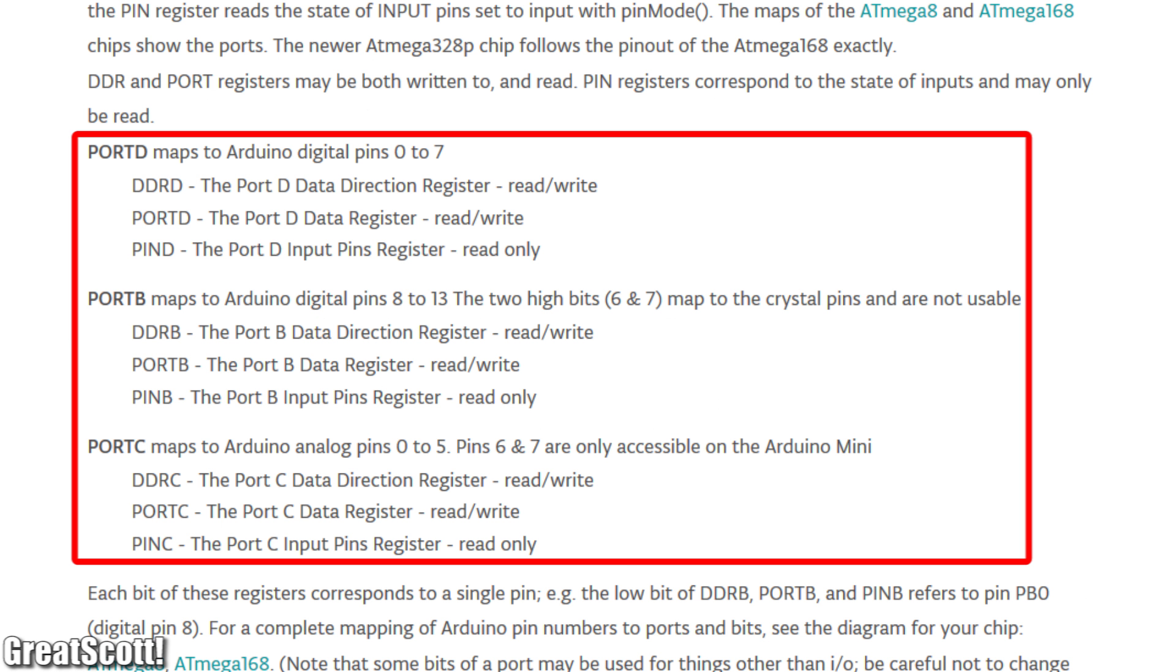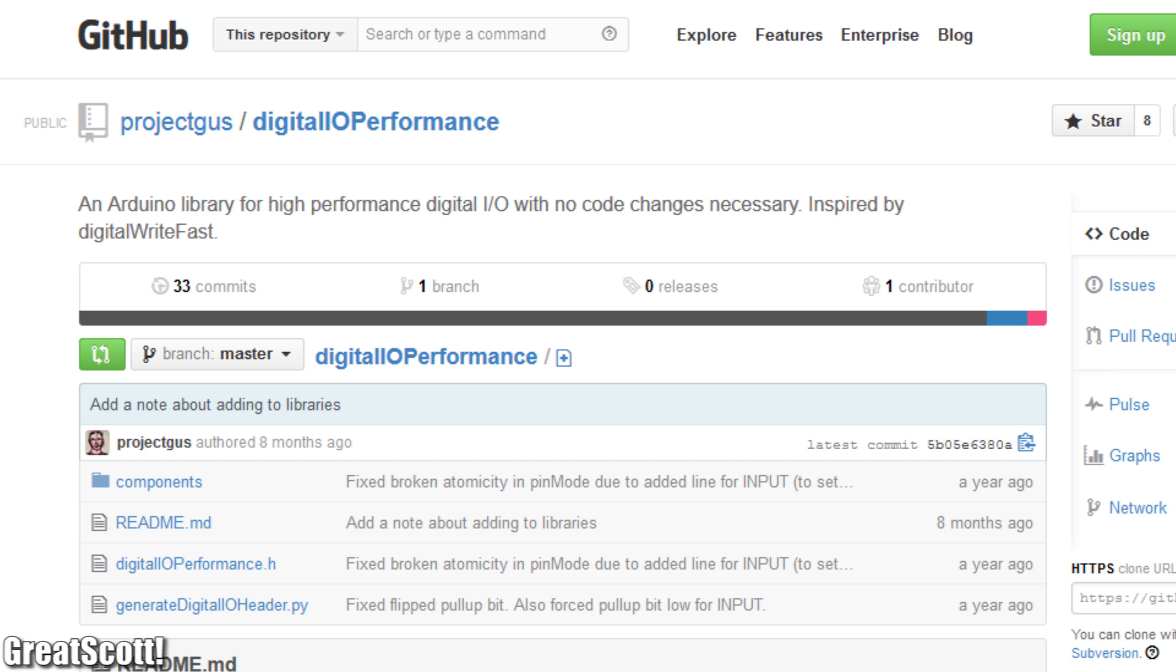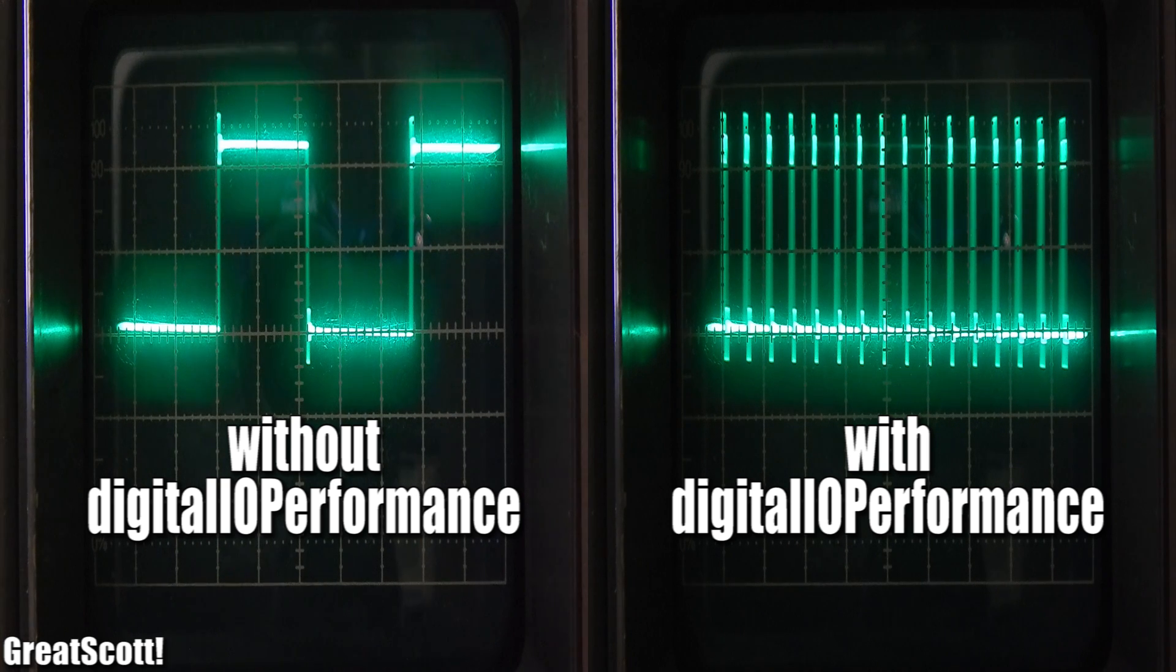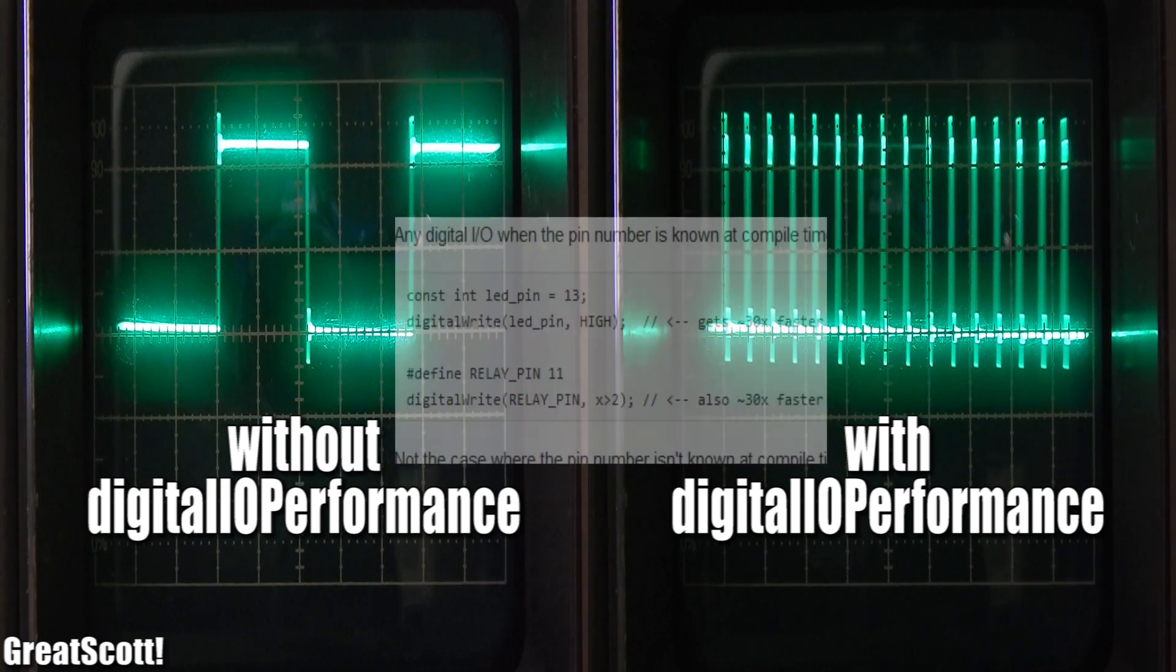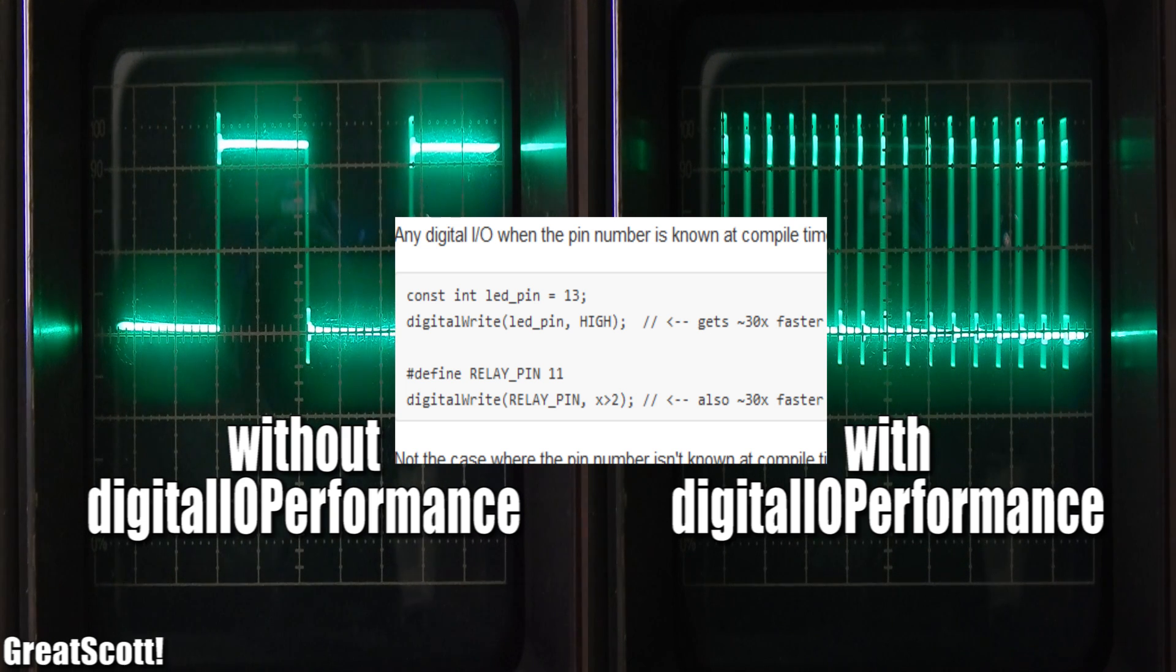We could make it faster by using port commands, but that would make it look kind of complicated and not beginner friendly. This library actually translates all digital write functions into the port commands without changing stuff around. And here on the oscilloscope we can clearly see the difference which proves that the port commands are around 30 times faster than the digital write functions.